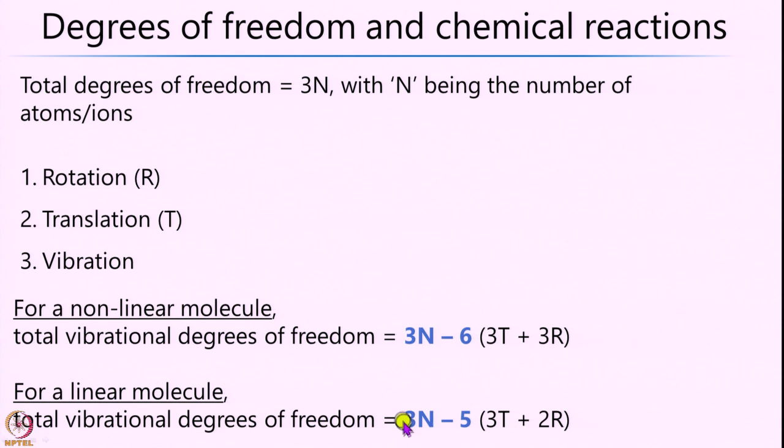If you want to validate the previous example, you can do a simple exercise: take the linear molecule case of 3n minus 5 and put n equal to 2, and you end up with 1 degree of freedom. That is exactly what we saw when we took two atoms — atom or ion A and atom or ion B — where the only coordinate was the distance between the two units. This confirms the connection between vibrational degrees of freedom and chemical reactions.